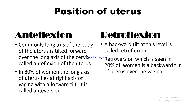Position of the uterus — anteflexion and retroflexion. In anteflexion, the long axis of the body of the uterus is tilted forward over the long axis of the cervix. In 80% of women, the long axis of the uterus lies at right angles to the vagina with a forward tilt — this is called anteversion. Retroflexion is a backward tilt at the body-cervix junction, and retroversion — seen in 20% of women — is a backward tilt of the uterus over the vagina. This retroversion in 20% of women is considered normal; when it is not, it is called pathological retroversion, which has many causes.